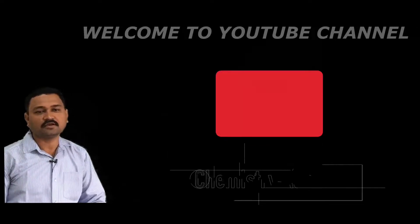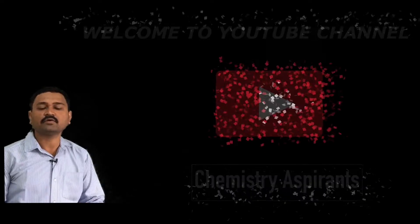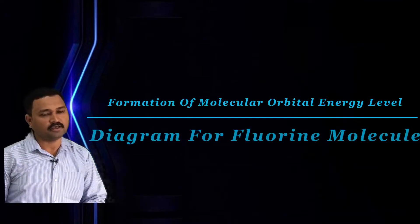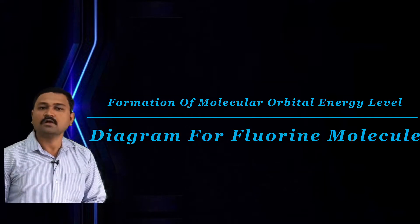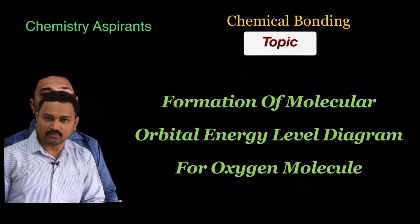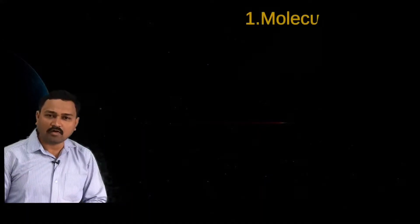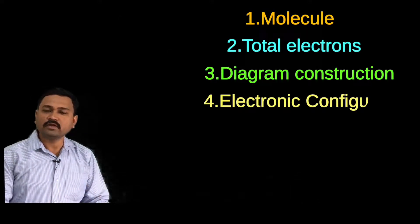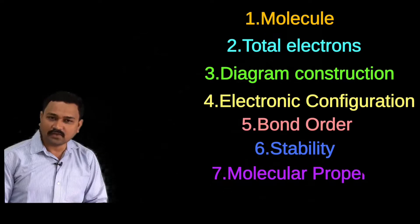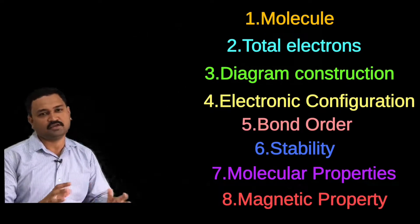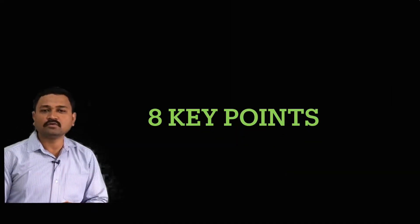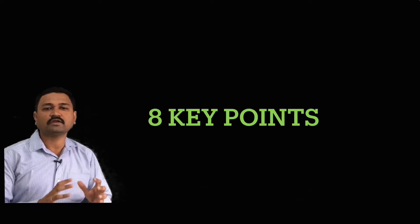Hello dear friends, welcome back to my YouTube channel Chemistry Aspirant. In today's lecture we are going to learn about the formation of the molecular orbital energy level diagram for fluorine molecule. In the previous lecture we already learned about the formation of the MO energy level diagram for oxygen molecule. We are using eight simple key points by which you can easily remember the formation of any molecule.